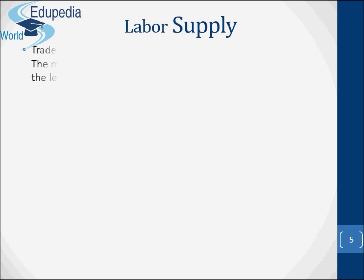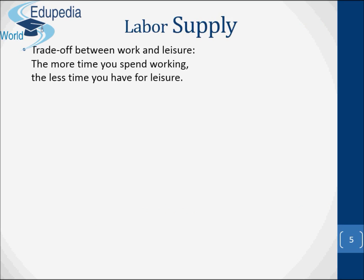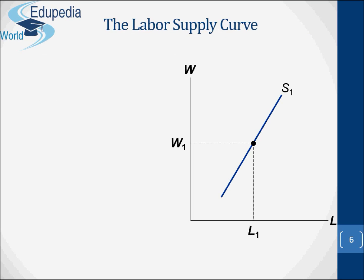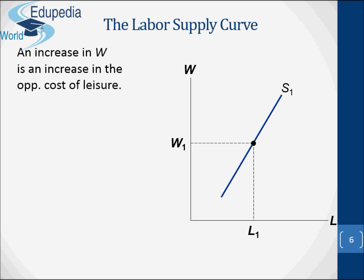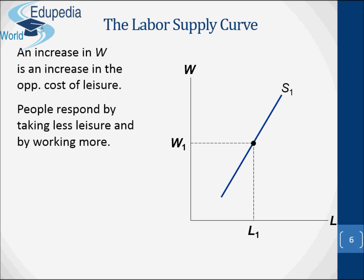Let's talk about the labour supply — specifically the trade-off between work and leisure. The more time you spend working, the less time you have for leisure. The opportunity cost of leisure is the wage. We briefly discuss the income and substitution effects. There is a possibility that the labour supply curve might be backward-bending if the income effect exceeds the substitution effect, but we will ignore that possibility for now and assume the labour supply curve is positively sloped.